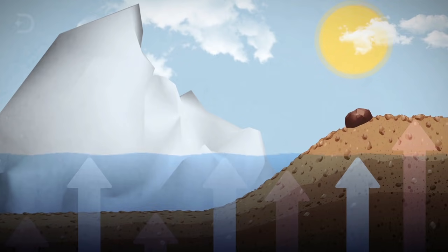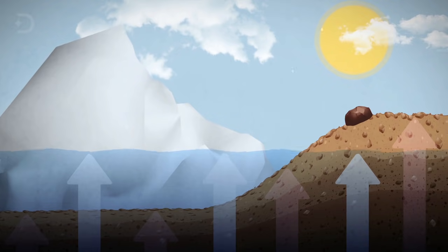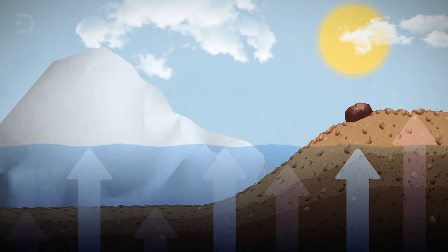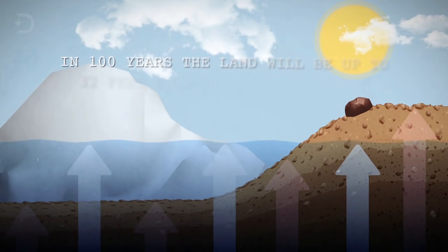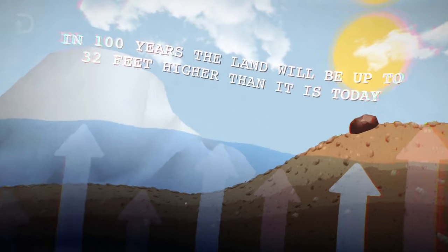A study showed that as the glaciers of Antarctica retreat, the land beneath is rising up five times faster than anyone thought, meaning that in 100 years, the land will be up 32 feet higher than it is today. And here is what it looks like.